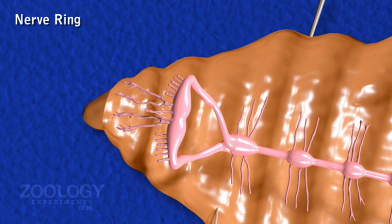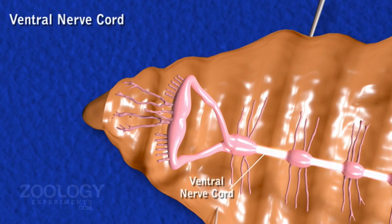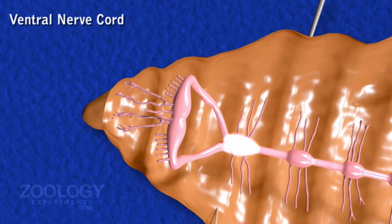In this way, a complete nerve ring is formed. The Ventral Nerve Cord, arising from the subpharyngeal ganglia, runs backwards in the midventral line to the posterior end of the body. In each segment, it presents a ganglion.